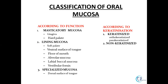Oral mucosa is also classified based on keratinization — it can be keratinized or non-keratinized. The masticatory mucosa, since it bears masticatory forces, becomes keratinized. So gingiva and hard palate fall under keratinized mucosa, while the other structures fall into the category of non-keratinized mucosa.